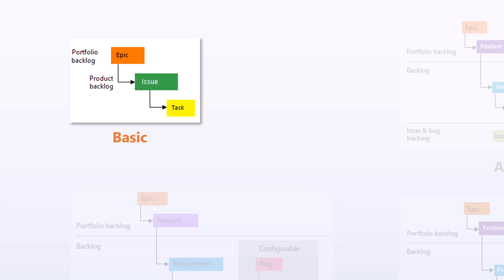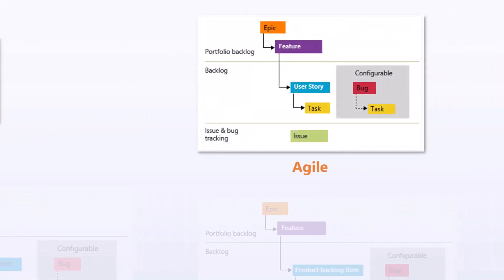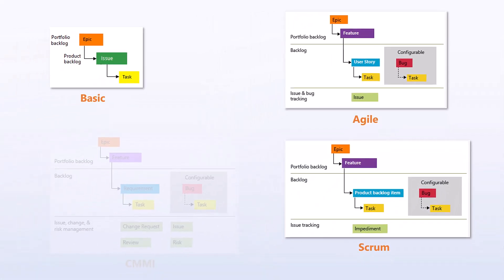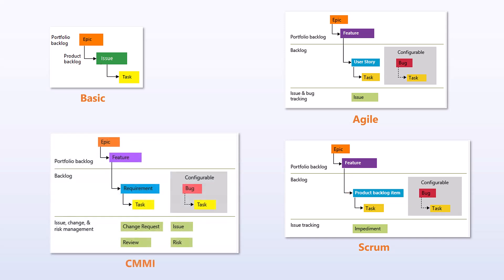Those four processes have specific work item types. The Basic process has epics, issues, and tasks. Agile has epics, features, user stories, tasks, and bugs — and bugs can have tasks as well. Scrum is pretty similar, except there's a difference in terminology: instead of user story, it uses product backlog items. CMMI is also very similar to Agile and Scrum, except user stories are called requirements instead of product backlog items. So except for Basic, the last three processes are pretty similar in how they organize their work item types.